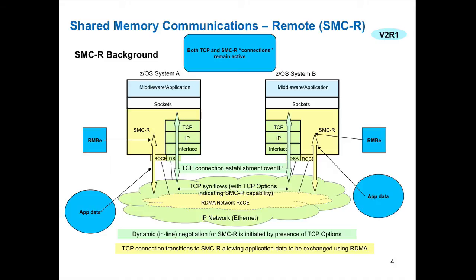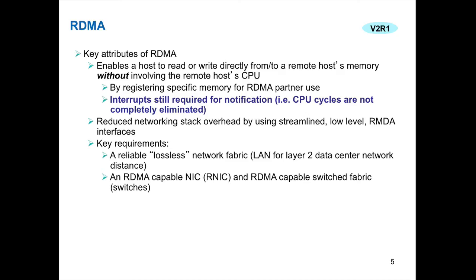From the picture you can see the new SMC layer in the stack and the RMBE — that buffer Jerry mentioned where data is actually written into. That's the registered data. Each side registers to the other side and writes into that buffer directly — that's the RoCE protocol. The application data, indicated by the yellow line, gets written into that RMBE.